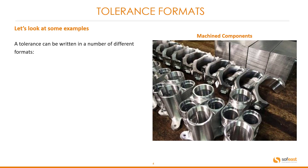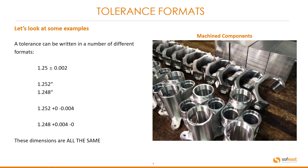So let's have a look at some examples. A tolerance can be written in a number of different formats. In this first example we have 1.25 plus or minus 0.002 of an inch. This next tolerance shows 1.252 as the maximum and 1.248 as the minimum. This next example gives us 1.252 plus 0 or minus 0.004 of an inch. This last example gives us 1.248 plus 0.004 minus 0. All these dimensions are the same, just in different formats.